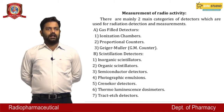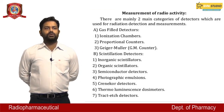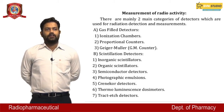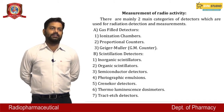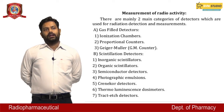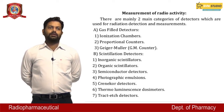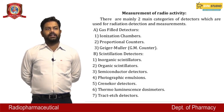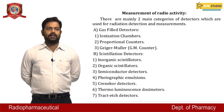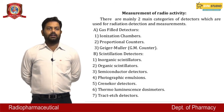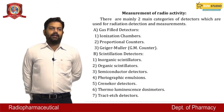Measurement of radioactivity uses two main categories of detectors. First, gas-filled detectors, which include ionization chamber, proportional counter, and Geiger-Müller (GM) counters. Second, scintillation detectors — inorganic and organic scintillators. Third category includes semiconductor detectors, photographic emulsions, crack track detectors, thermoluminescence, and track detectors.